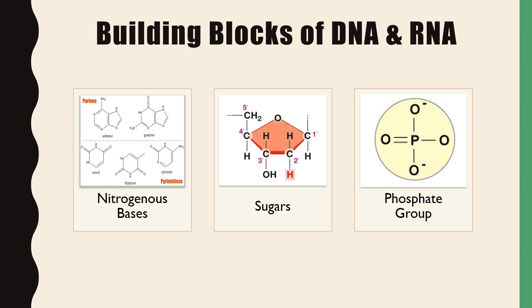The basic building blocks of DNA and RNA include nitrogenous bases, sugars, and phosphate groups. These blocks are put together to create strands of DNA or RNA. We're going to talk about each of these in a little more detail, and then talk about how they fit together to create DNA or RNA strands.